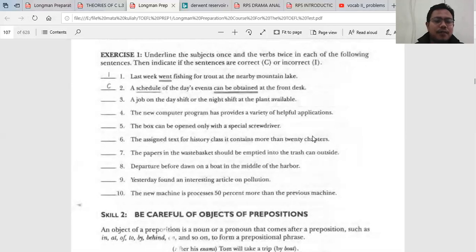And look at number two: 'A schedule of the day's event can be obtained at the front desk.' 'A schedule' is a subject, 'can be obtained' is a verb. It is a good answer or it is a correct answer, correct sentence.